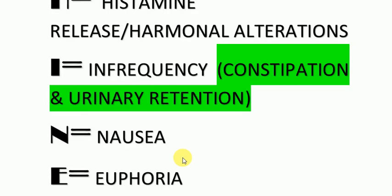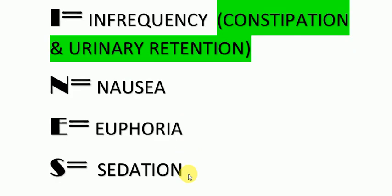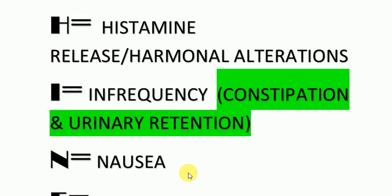N for nausea, and E for euphoria — euphoria is the state of intense excitement and happiness. And S for sedation. So the mnemonic is MORPHINE.